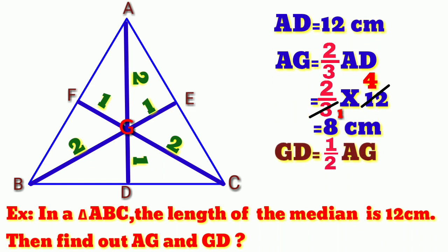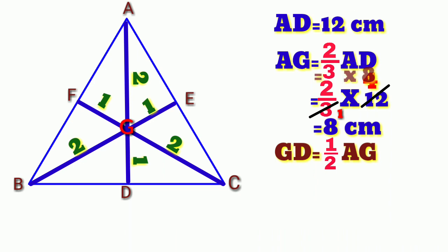we know that GD is half of AG. That means, GD is equal to 1/2 of AG. That means, 1/2 times 8. By simplifying, we will get 4 cm. So GD is equal to 4 cm.